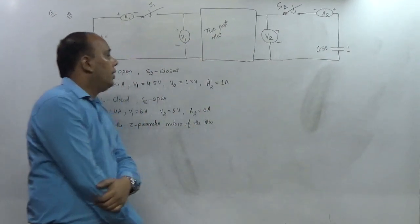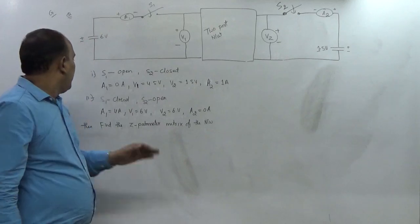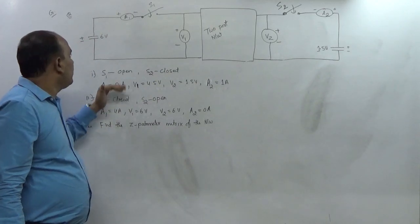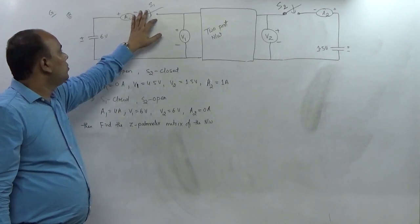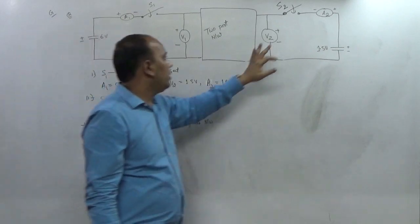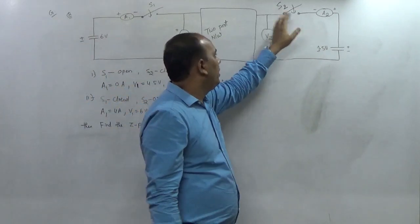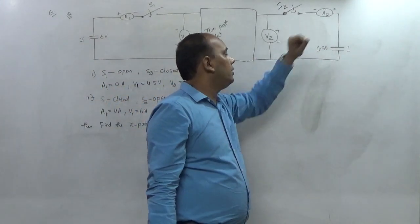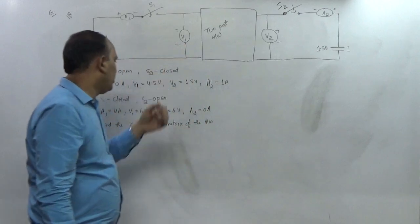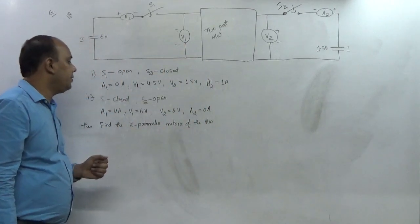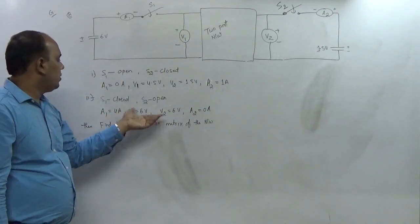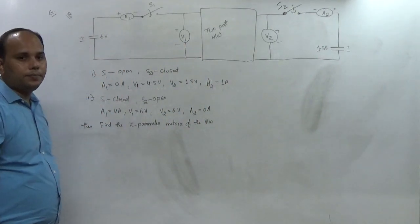In the second case, S1 is closed and S2 is open. When S2 is open, the ammeter A2 reads 0, meaning I2 = 0. The corresponding values of V1, V2, and I1 are given for this condition.